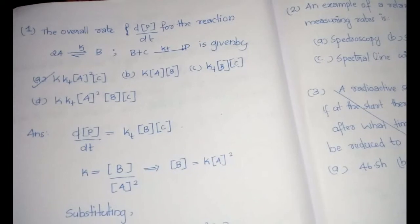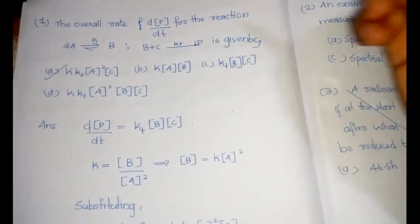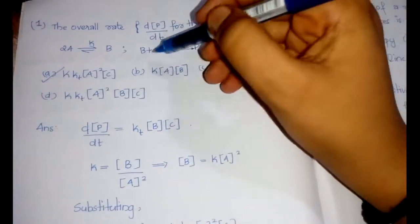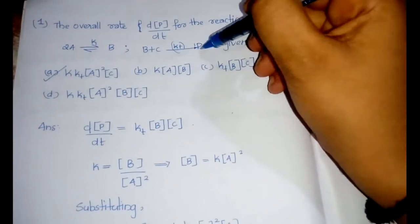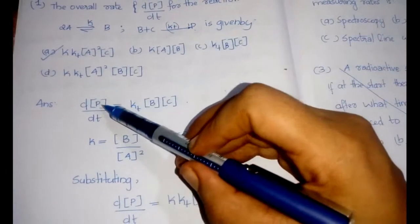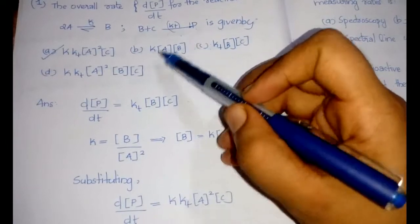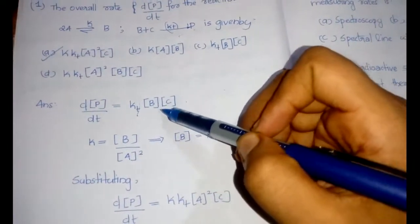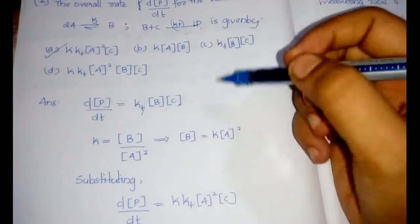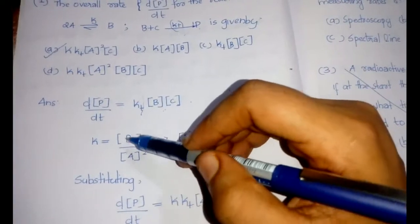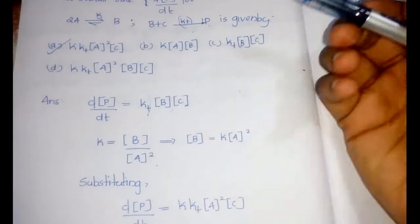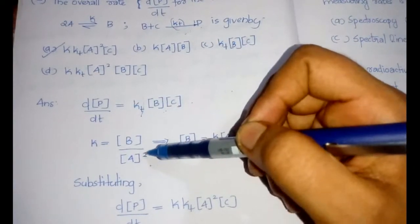The first question: find the overall rate dp/dt for the reaction where 2A gives B (equilibrium constant K), and B + C reacts with rate constant k_t. We write dp/dt = k_t × [B] × [C]. The equilibrium constant K is written as the concentration of products divided by reactants raised to their coefficients, so K = [B] / [A]².